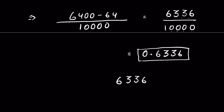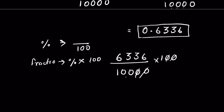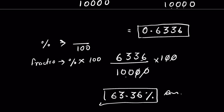To convert to percentage form, we multiply by 100 — since we divided by 100 when converting from percentage to fraction, we now multiply back by 100. Two zeros cancel, shifting the decimal two places, giving us 63.36 percent. So in percentage form, the answer is 63.36%. Let me know your answer in the comment section — thanks for watching!